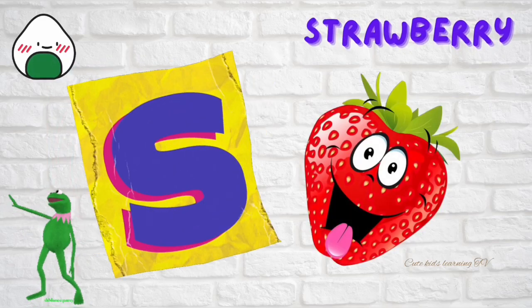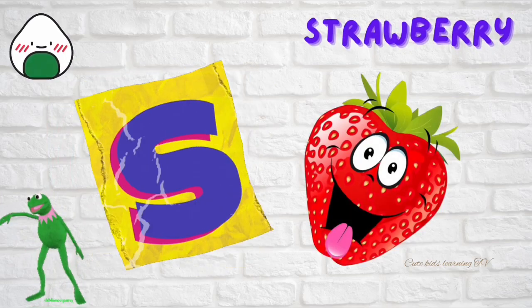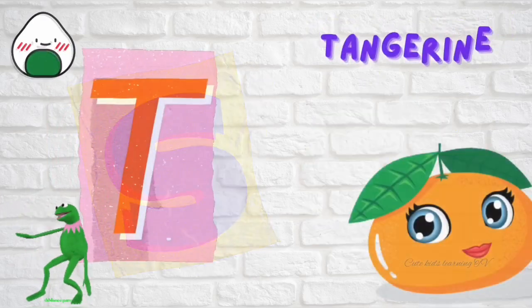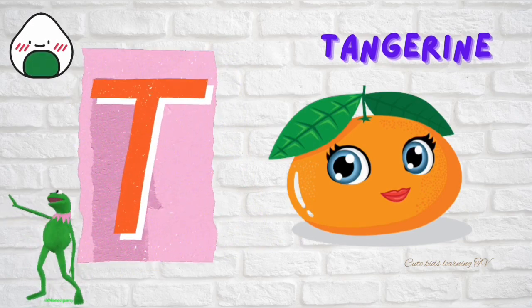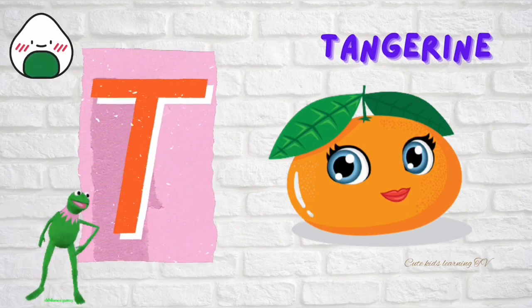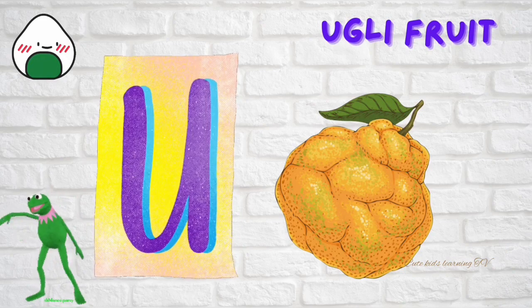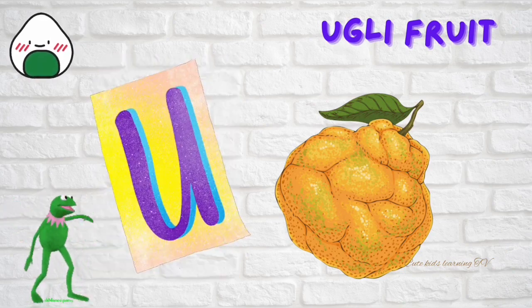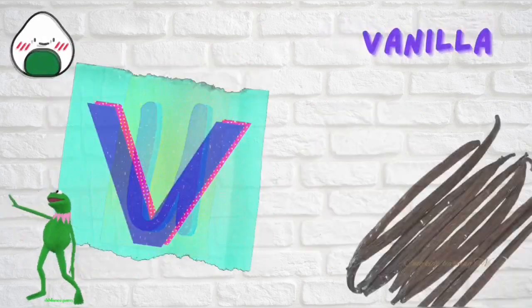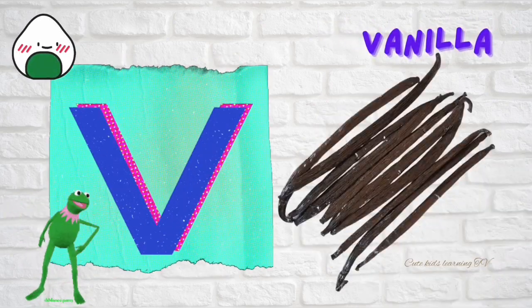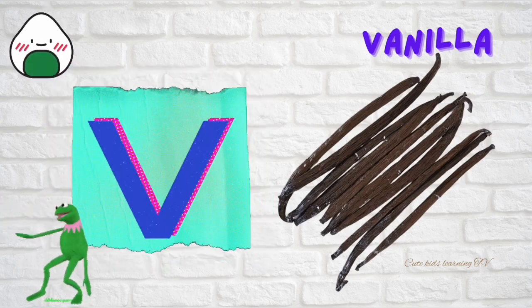S is for strawberry. T is for tangerine. U is for ugly fruit. V is for vanilla.